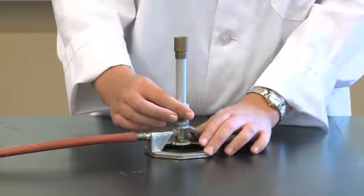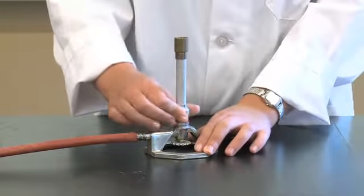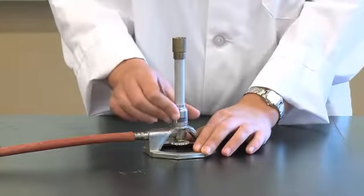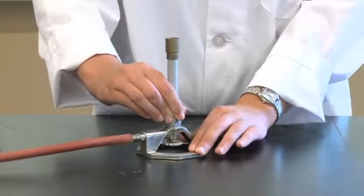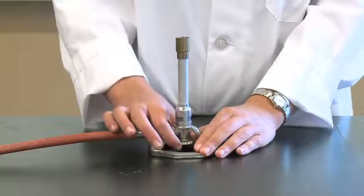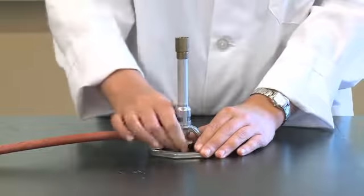You'll now want to turn the barrel clockwise to completely close the air inlet. Do this until there's resistance. Now turn it back slightly so just a small amount of air is let through. You'll also want to close the gas needle valve located underneath the Bunsen burner. Do this by turning it completely counterclockwise.